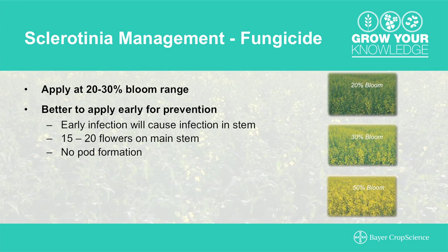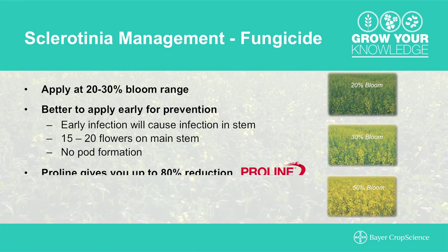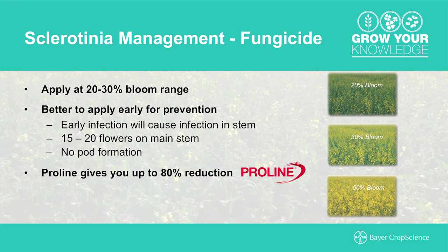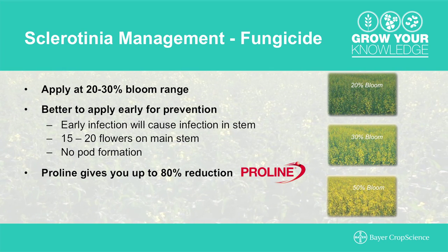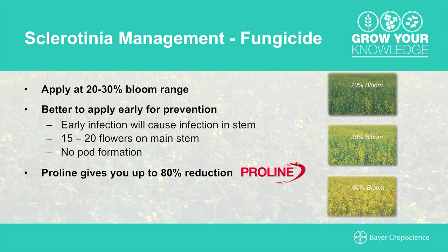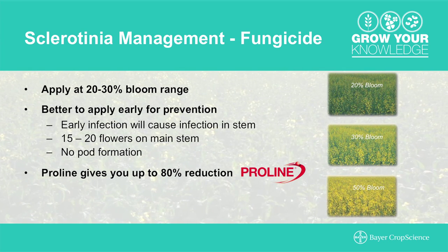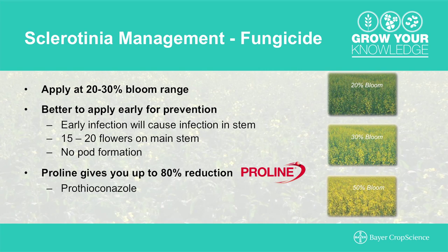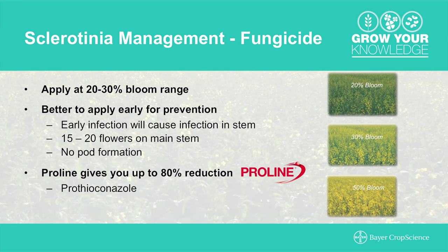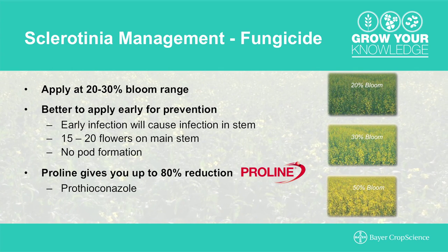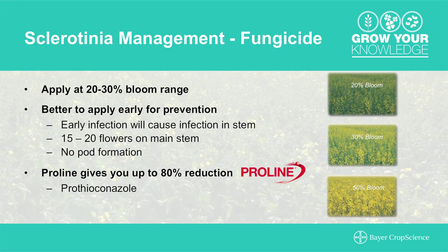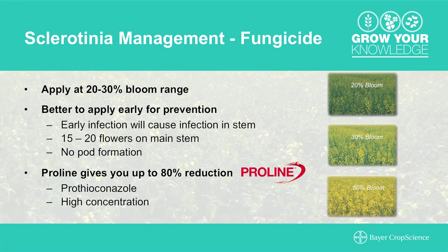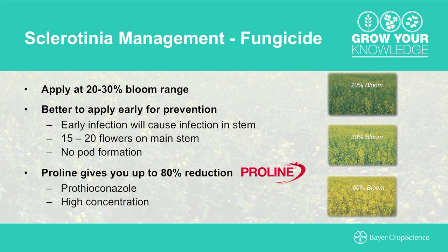For fungicides that offer the best protection for sclerotinia in your canola crop, one of the obvious choices is Proline. You're effectively looking at reduction levels of up to 80% in the crop, which is going to result in significant yield savings. Proline has been a highly effective product used for a number of years, and the active ingredient Prothioconazole is globally known and well used for managing sclerotinia. The added bonus is that Proline is a highly concentrated product, so very small volumes to handle — easy to mix and easy to apply.